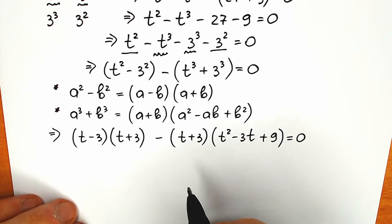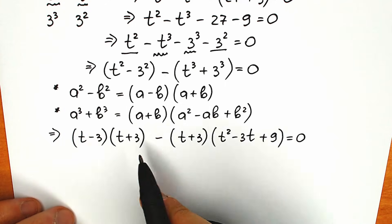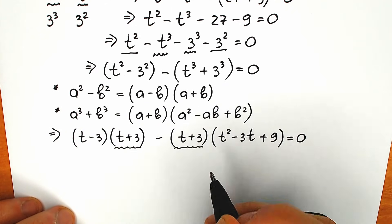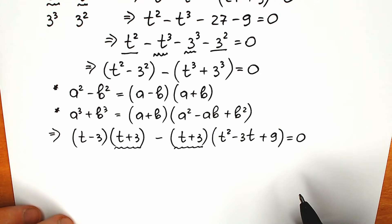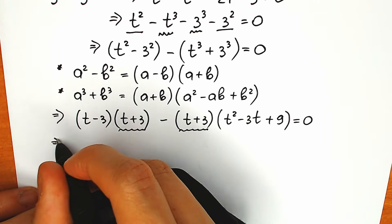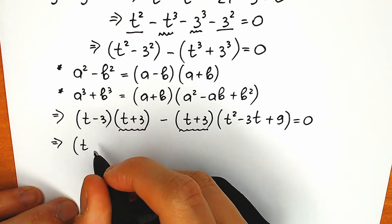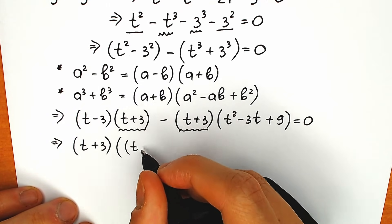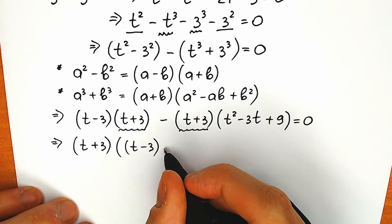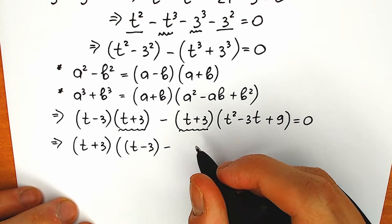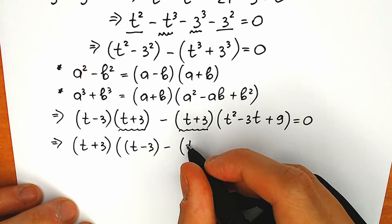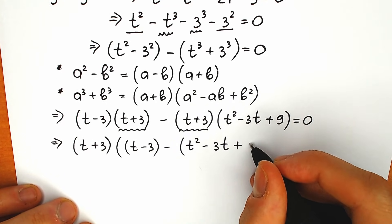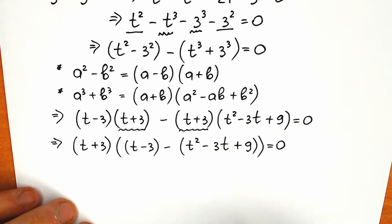Looking at this from another angle: we have (t plus 3) appearing in both terms, so we can factor out (t plus 3) as a common factor. That gives us (t plus 3) times [(t minus 3) minus (t squared minus 3t plus 9)] equal to zero.